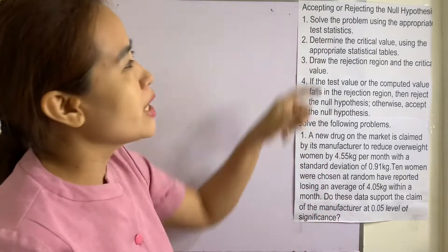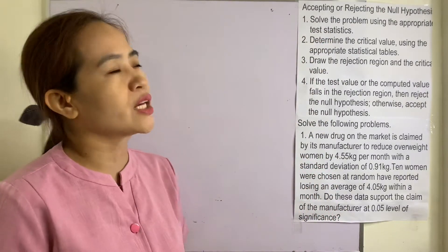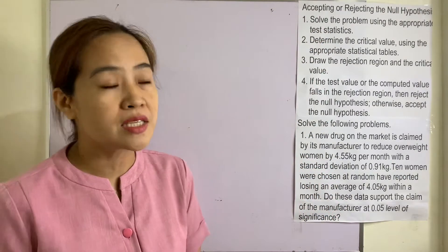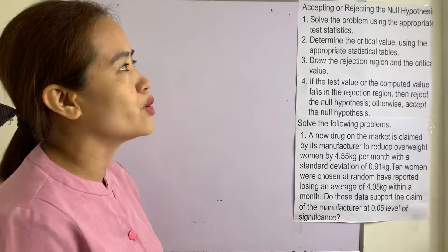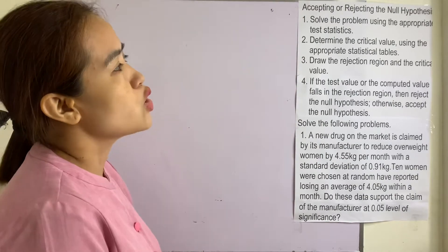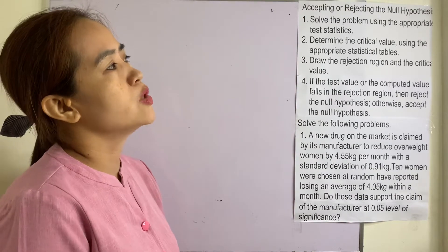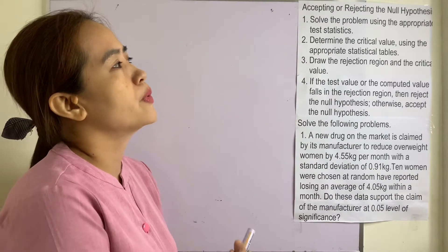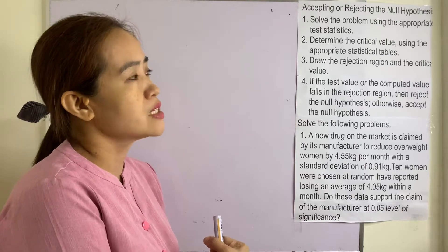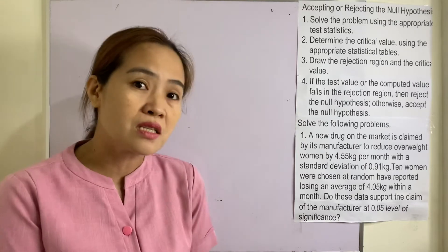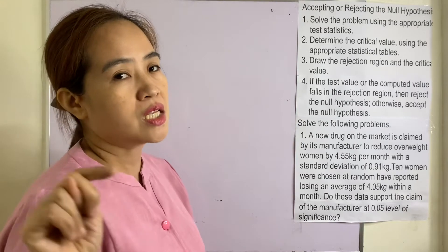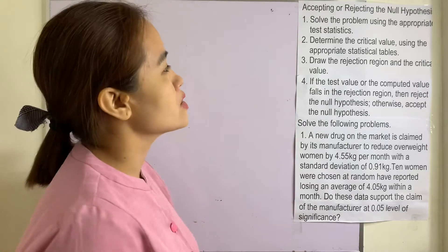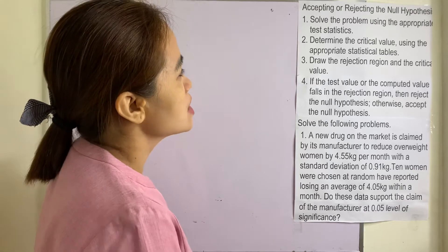When do we accept or reject the null hypothesis? We will be having four steps. Number one, solve the problem using the appropriate test statistics. You have to use the Z and the T formulas for this.